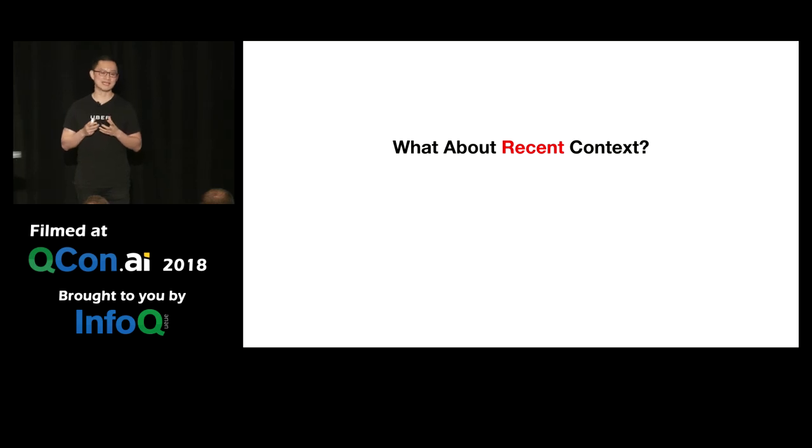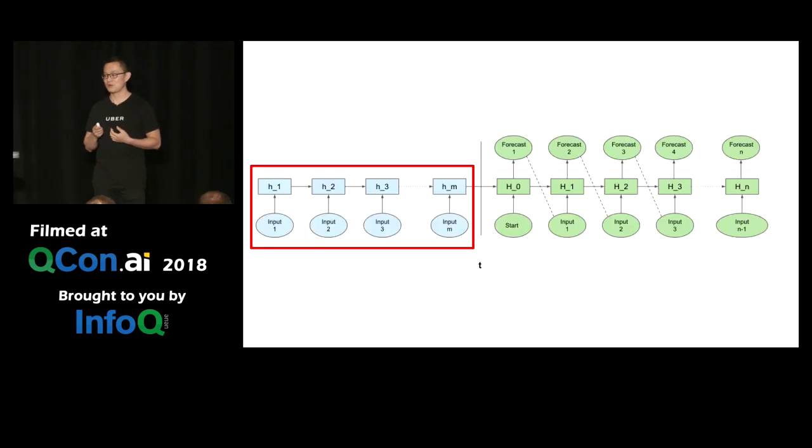Then another key piece is, what about our recent context? Usually, time series data is not independent, does not have just independent data points. The data points are dependent with each other, especially along the time axis. That's why, if you read the literature, there's a key concept called autoregression, meaning that the value of the current time may depend on the value of the past times. You can extend the past however long you like. Now, what if, how can we encode this kind of information into our algorithms?